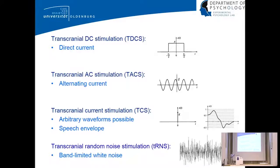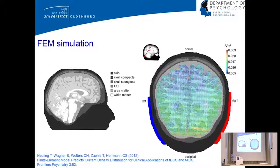Regarding the type of stimulation waveform: what has been around longest is TDCS, where you apply a direct current — you switch it on, it stays on for 10 or 20 minutes, then you switch it off. That's not what I'll talk about. More interesting is alternating current stimulation, which interferes with brain oscillations. You apply, say, 10 Hz to interfere with alpha. In principle, any waveform you can generate in MATLAB can be input to the stimulator — impulses, recorded EEG, or as I'll show, the envelope of speech. There's also transcranial random noise stimulation using band-limited white noise.